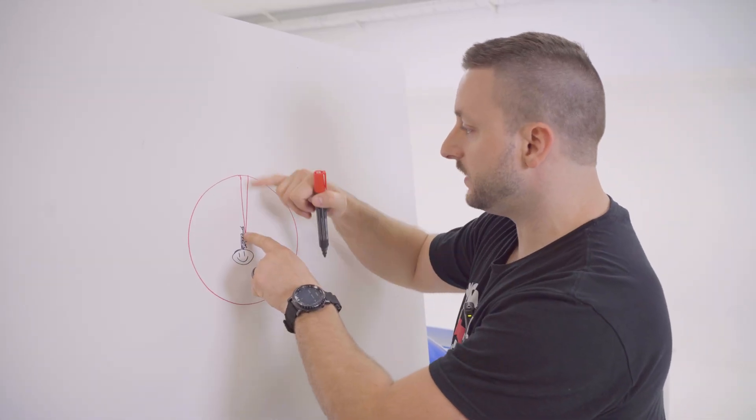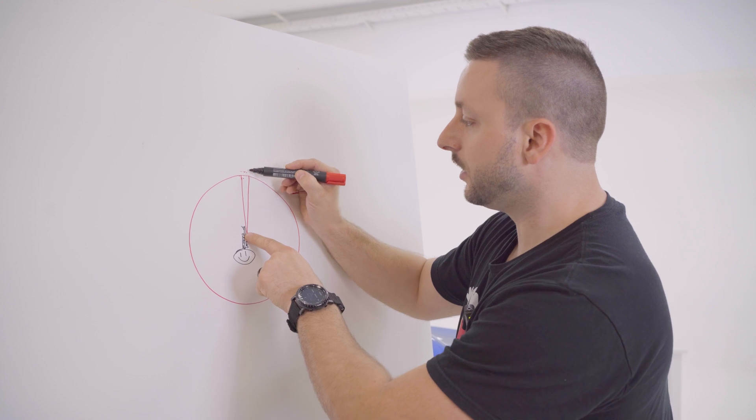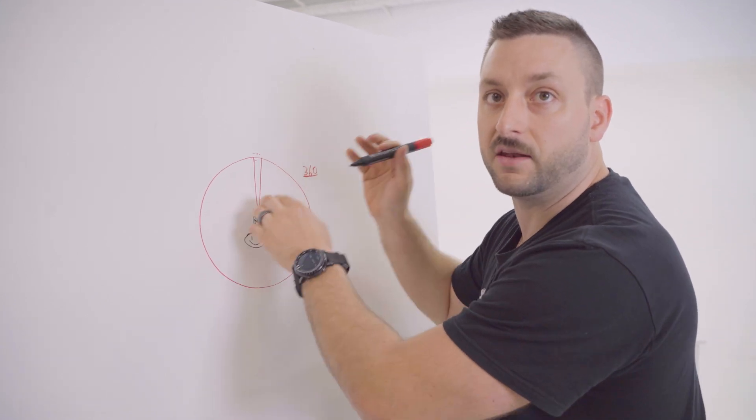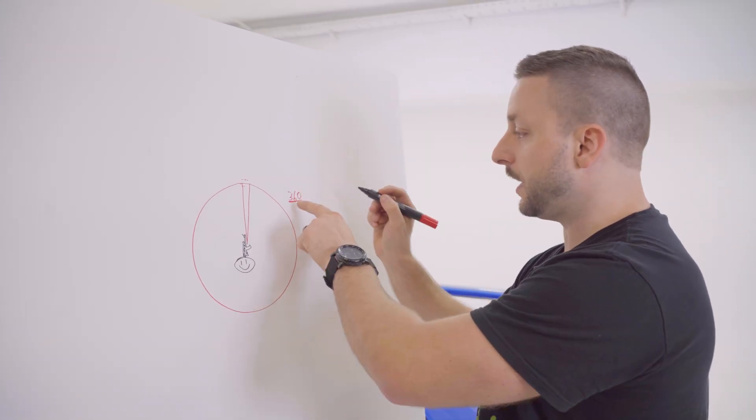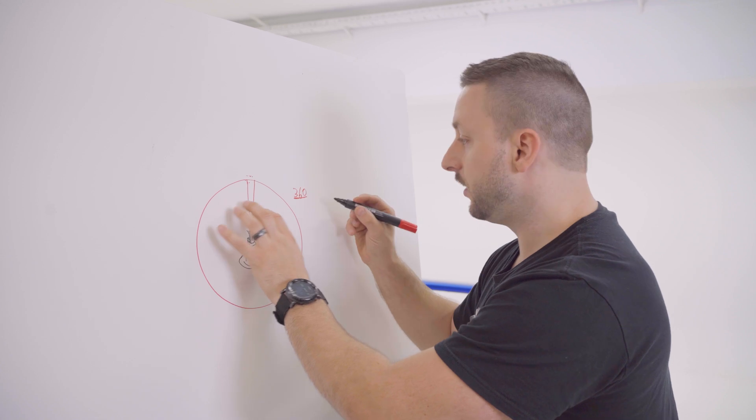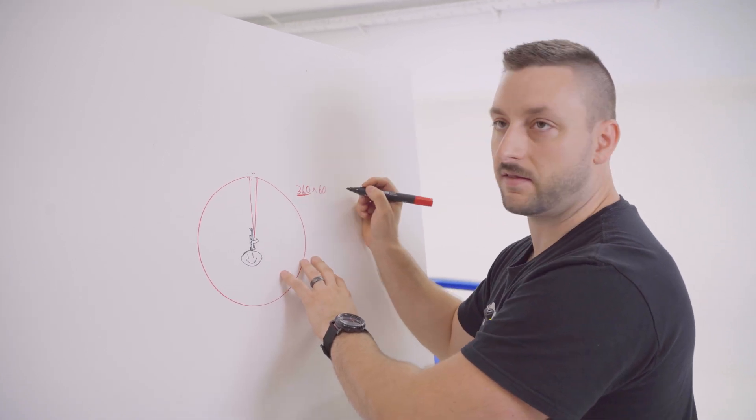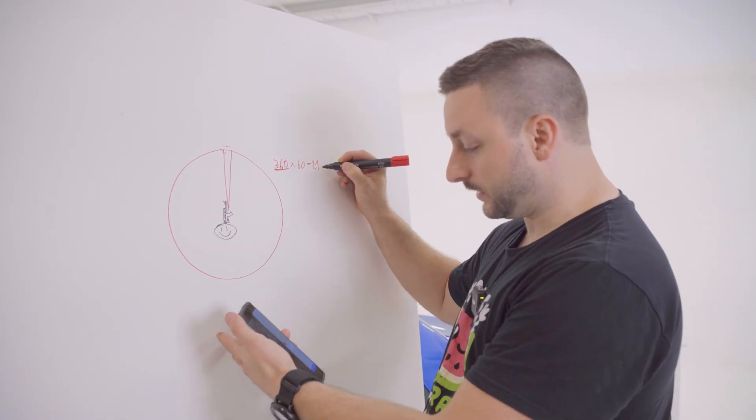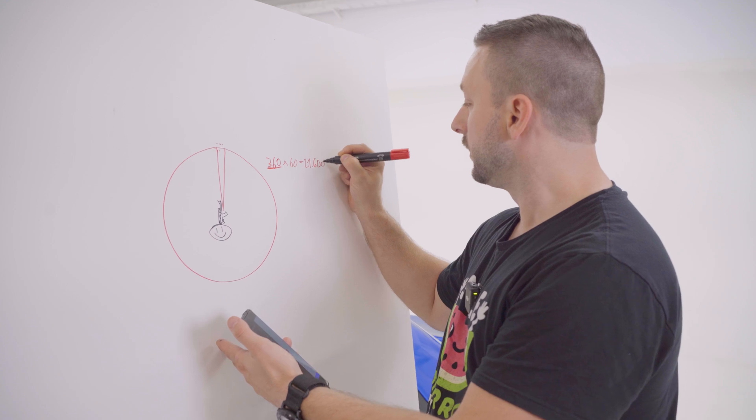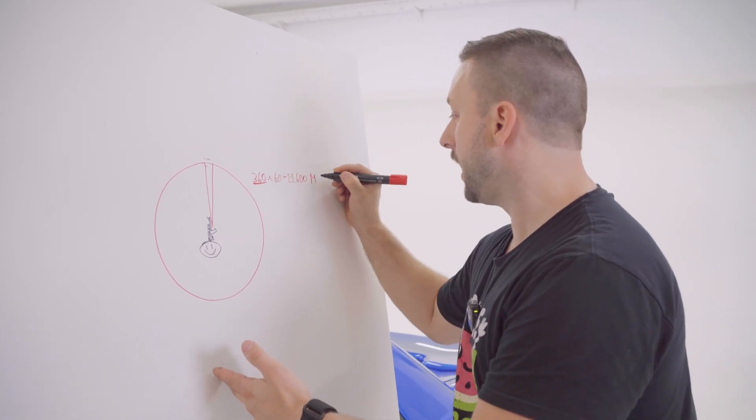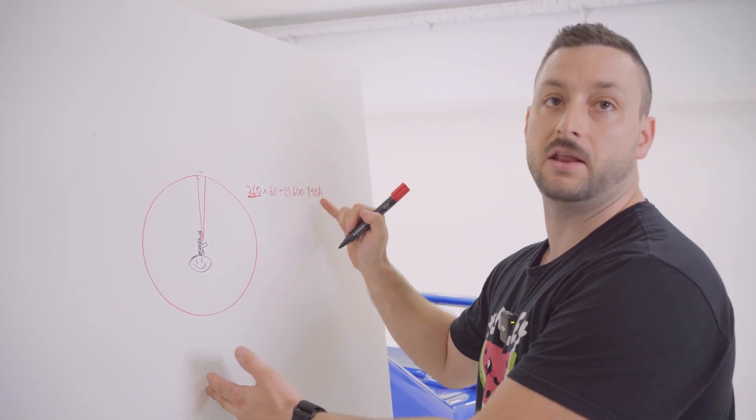Now if we take one of these degrees and then divide it to 60 parts we get minutes. And now if we multiply 360 degrees with 60 minutes we get 21,600 MOA. That's minute of angle.